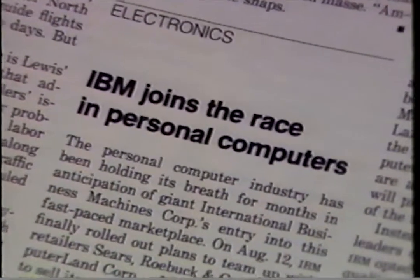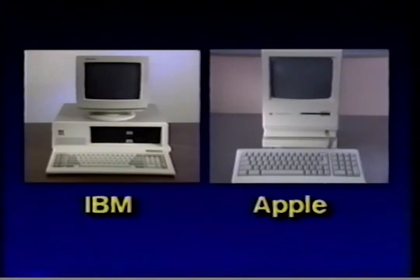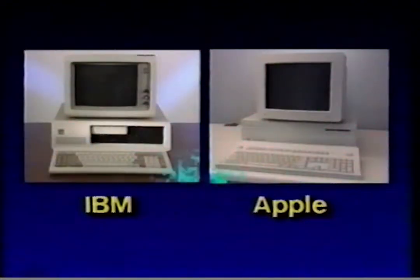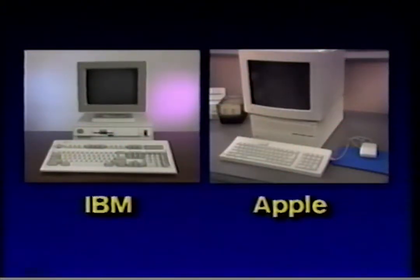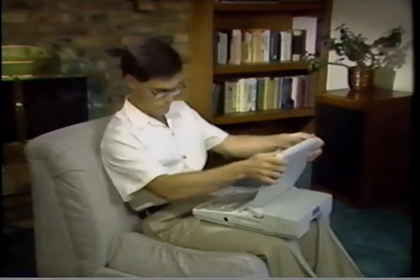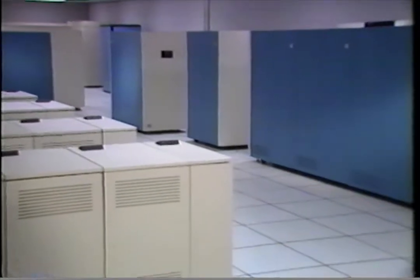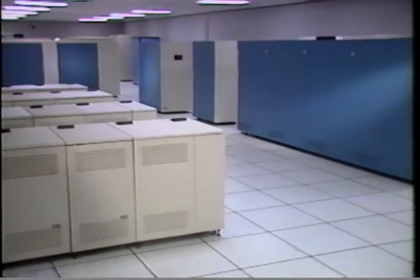In 1981, IBM introduced its own microcomputer. During the 1980s, many less popular computers were discontinued, and the world of microcomputers split into two main groups: IBM and Apple computers. Apple includes the Macintosh family. Rapid advancements have made computers faster, smaller, and more affordable. Some of today's laptop computers contain the same power as the massive mainframes of the 1960s at a tiny fraction of the price.